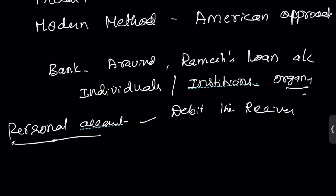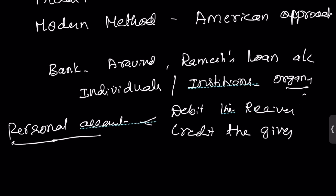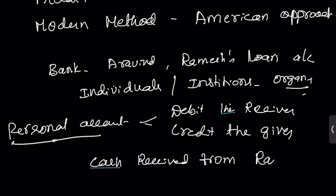The rule for personal account is: debit the receiver, credit the giver. For example, cash received from Ramesh. Here we have two accounts: cash account and Ramesh account. Ramesh account is a personal account. Since we are receiving cash and Ramesh is the giver, Ramesh account will be credited — credit the giver.